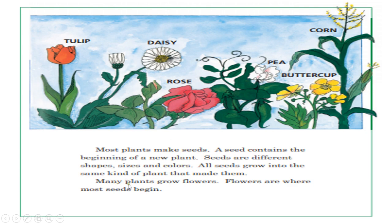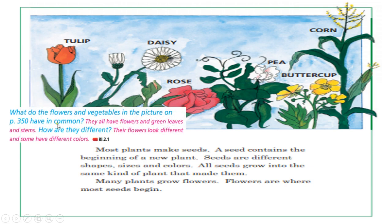Many plants grow flowers. Flowers are where most seeds begin. For example, almond trees also grow some flowers — this is where their seeds are. What do the flowers and vegetables in the picture on page 350 have in common? They all have flowers, green leaves, and stems.